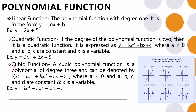A cubic function is a polynomial of degree 3, written as f(x) equals ax cubed plus bx squared plus cx plus d, where a is not equal to 0. For example, 5x cubed plus 3x squared plus 2x plus 5 is degree 3. Polynomials can also have degree 4, 5, 6, and so on.